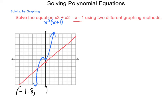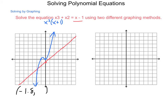A second method for solving this is to set it equal to zero. Subtracting x and adding 1 to each side gives x cubed plus x squared minus x plus 1 equals zero. We are looking for where this expression equals zero. It's a cubic with a positive lead coefficient — low on the left, high on the right. Let's build a quick table of x and y values for x equals negative 2, negative 1, 0, 1, and 2.